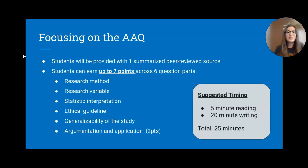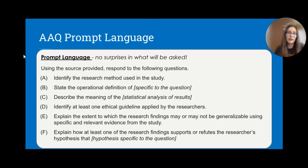Focusing in on the AAQ, you'll be provided with one summarized peer-reviewed source with a few different components. You can earn up to seven points across six different question parts, with the final part worth two points. Suggested time is 25 minutes total — five minutes planning and 20 minutes writing. The AAQ prompt will always have fairly consistent language, though it depends a bit on the research study.